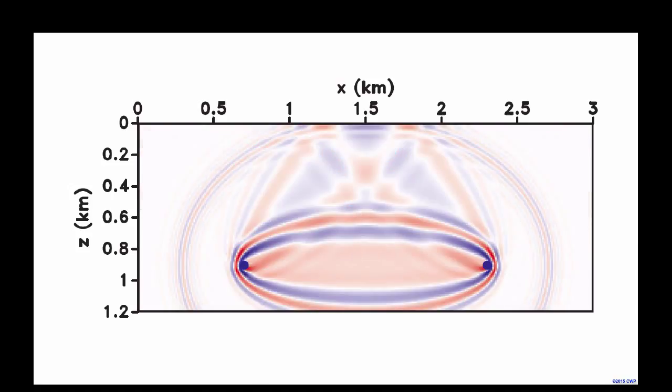Instead, if we use local correlations we are able to capture the correct information from the seismic events, because we will compare a seismic event from the model data with the corresponding event in the observed data. The work of tomography using correlations is in the line of minimization functions based on penalization of energy outside local correlations.